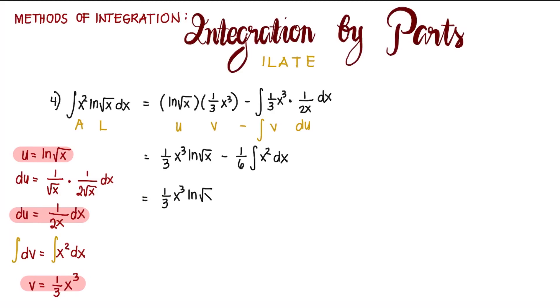One third x cube ln of the square root of x minus one over six, and integrating that's one third x cube plus c. One third x cube ln of the square root of x minus one over 18 x cube plus c. And that is our final answer.